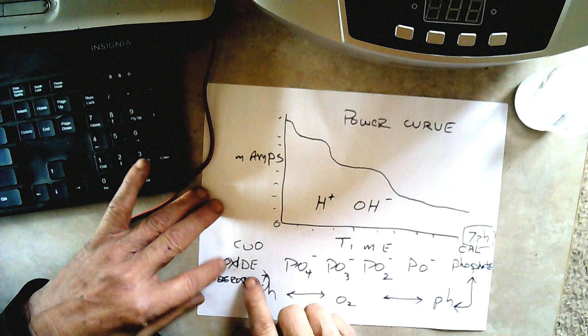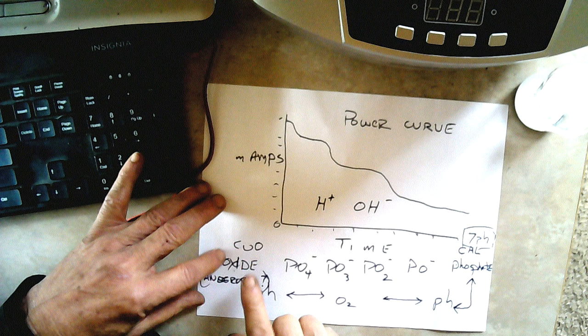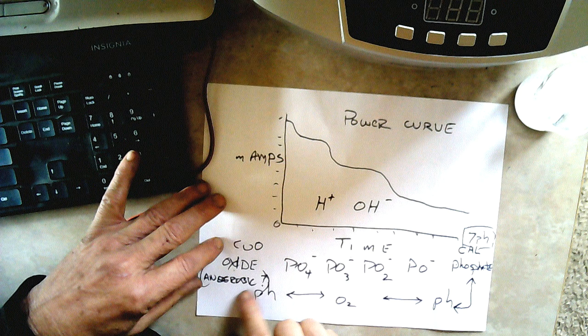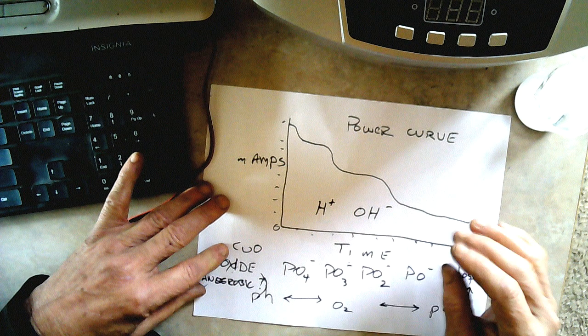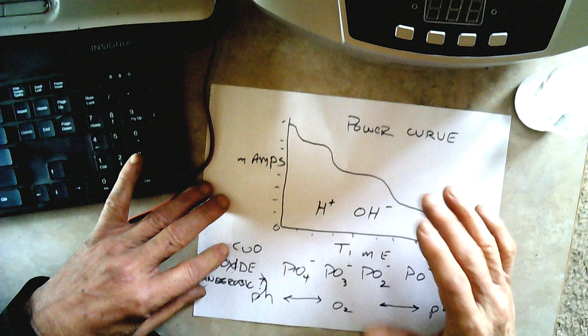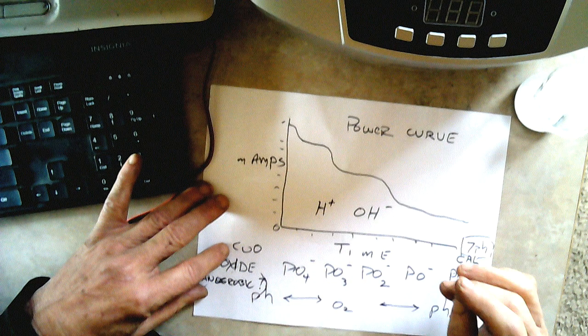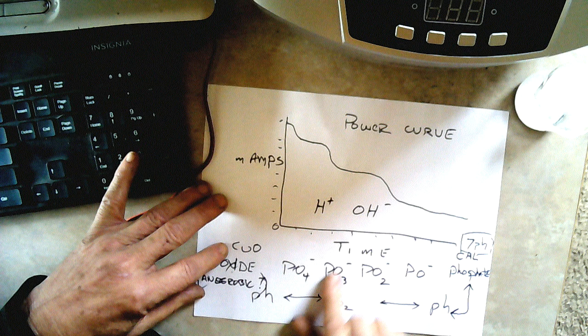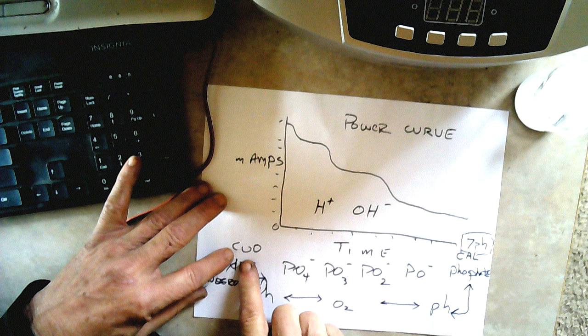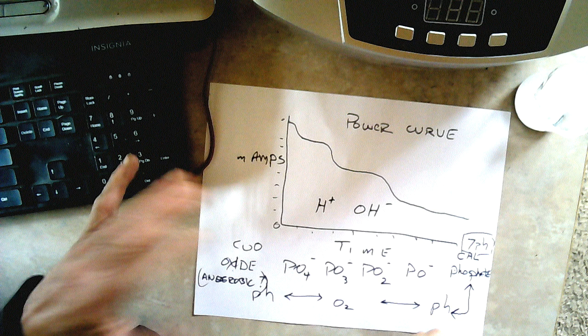The copper oxide, in nature maybe those are there under anaerobic conditions. If there's not enough oxygen in the atmosphere or in the soup, the acids can pull an oxygen from the oxides and transfer it. But I'm just speculating on that.